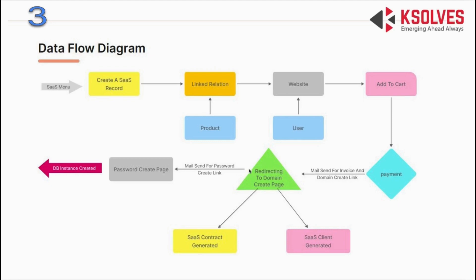Once the user inputs and submits the proper domain name, a SaaS contract gets generated for the client. They are redirected to a page confirming that their instance is successfully created. They also receive a password reset email containing a link through which they can connect to their own instance. Their database now exists and is ready to use.